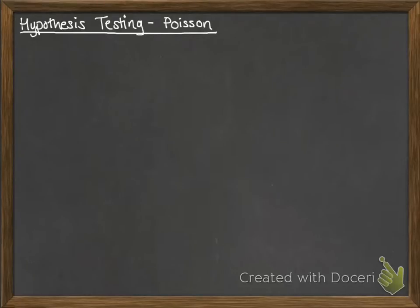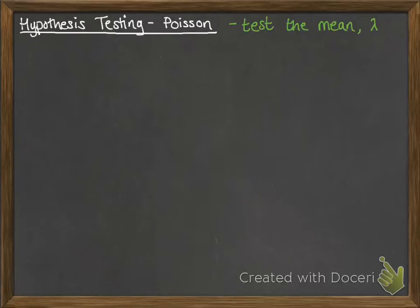This video applies hypothesis testing to a situation following a Poisson distribution. We're going to dive straight into an example. Since nothing has really changed in the approach, we do exactly the same things as for binomial — except this time we're testing the mean lambda, instead of testing the probability of success in the binomial distribution.